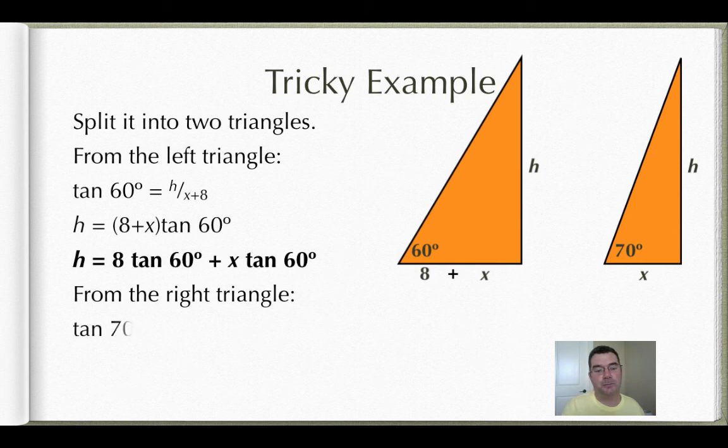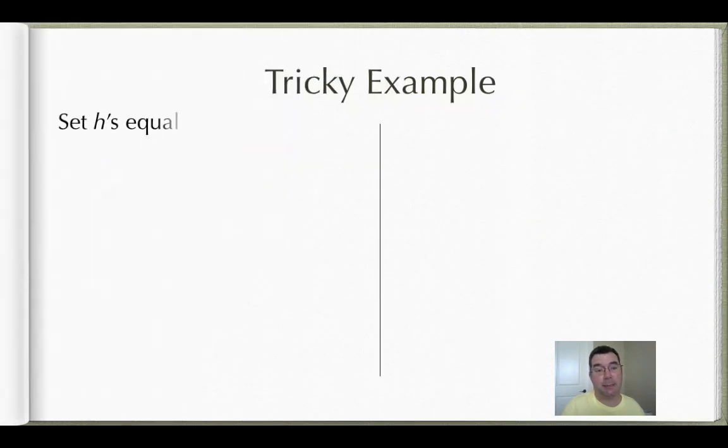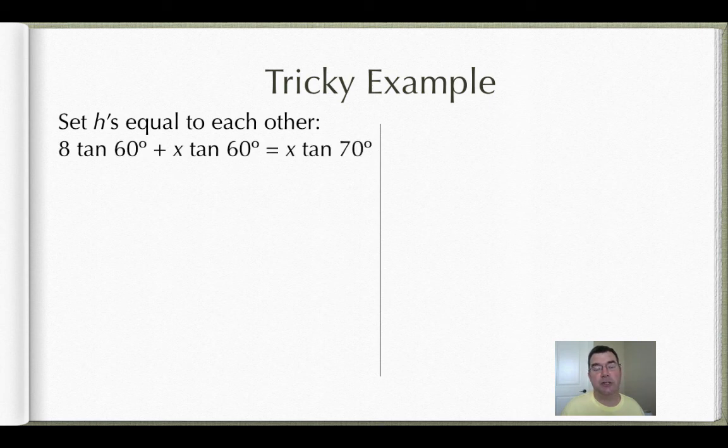Now from the right triangle, I've got opposite h, and I've got adjacent x, so I'm dealing with tangent. The tangent of 70 is h over x. If I cross multiply, I get that the height is x times the tangent of 70. So what I have is I have this variable h that's equal to two different things. And so if it's equal to two different things, then those two things are equal to each other. That's my next step in doing this. I'm going to set the h's equal to each other.